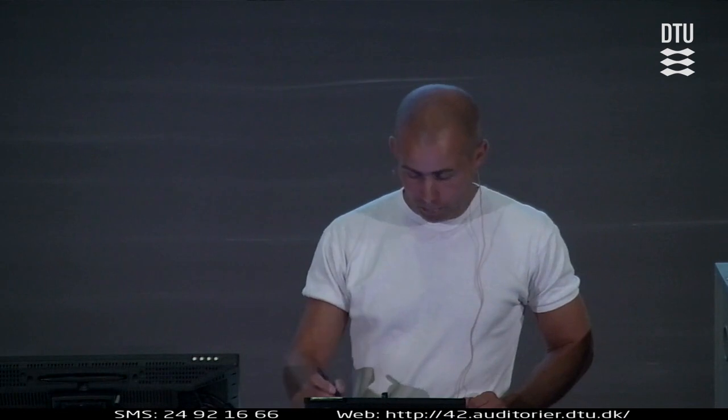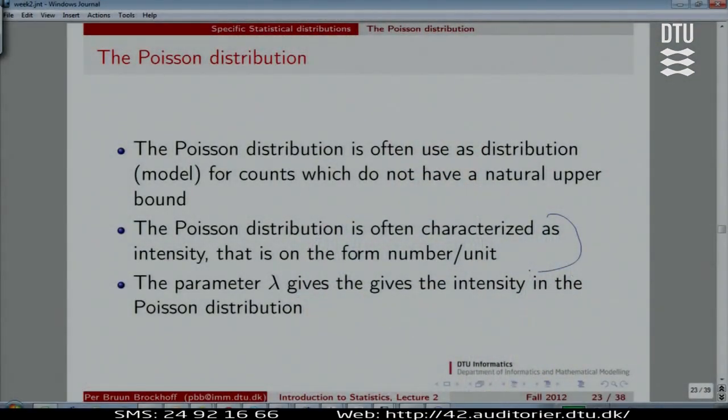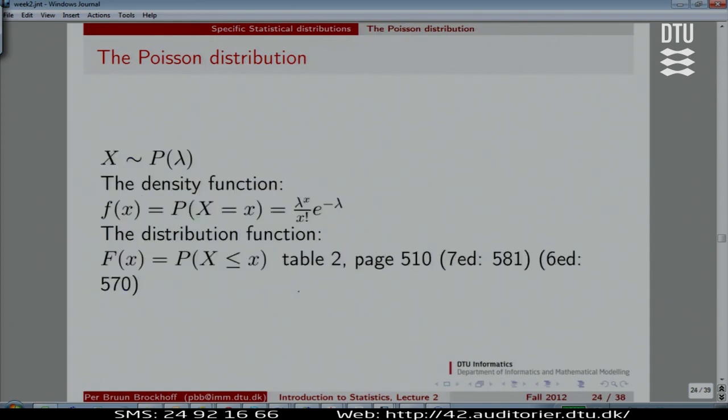We describe the Poisson distribution by this intensity, which is the average number of events per time or per area, if it's counting in the area. And this is actually also the one we call lambda, and if we know lambda, we write up the formula for the Poisson.